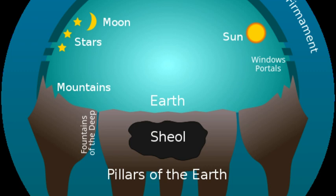Proverbs 25:3 says no one can measure the height of the skies or the depth of the sea. Psalm 24:1-2 reads: the earth belongs to the Lord and everything in it, the world and all its inhabitants. He built it on the waters and established it on the rivers — the underground river systems. This brings us to Job 26:7.